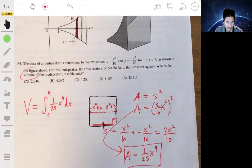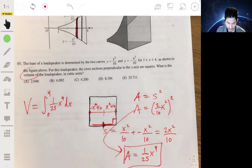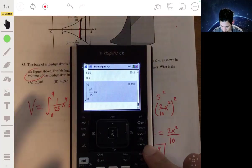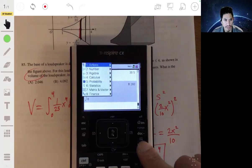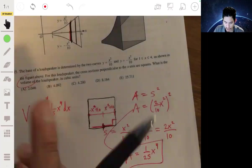We get 8.192. What? That is wrong. What did I do wrong? So this is a good example, you got to pay attention to detail. I integrated from 0 to 4, not 1 to 4.